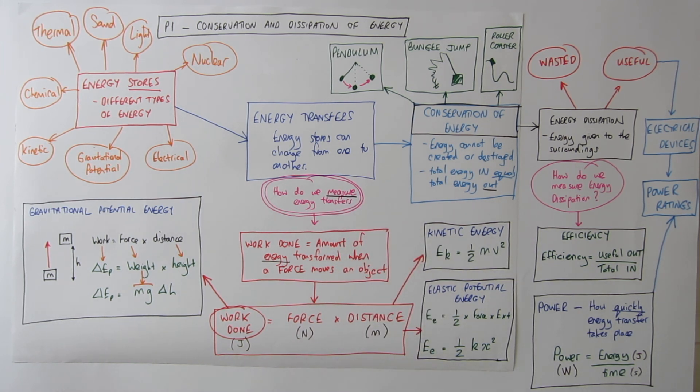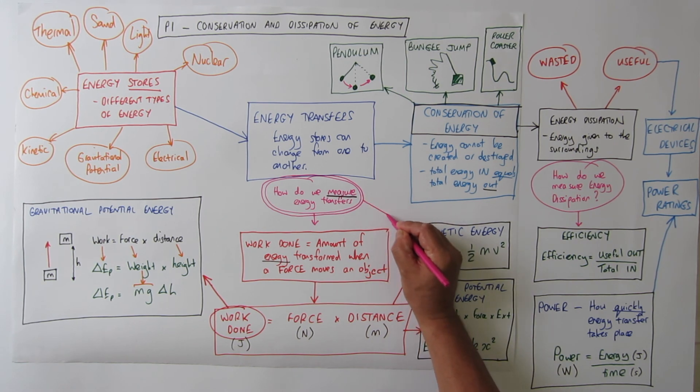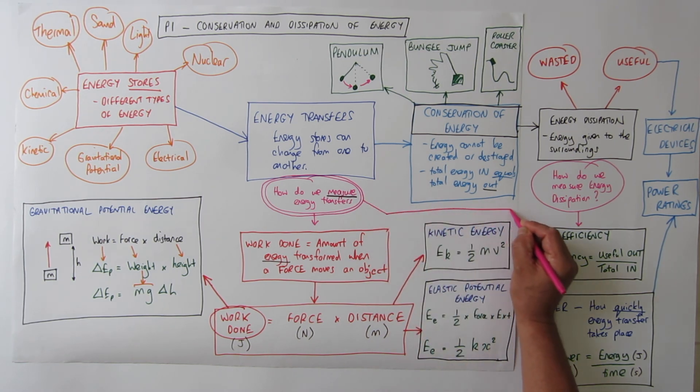Well the first one is with an equation for work done. Don't forget work done is the amount of energy that's transferred. A second way of measuring energy transfers is with a thing called efficiency.